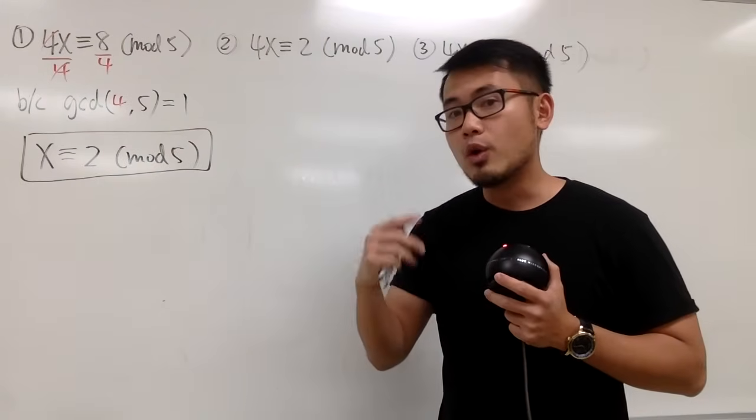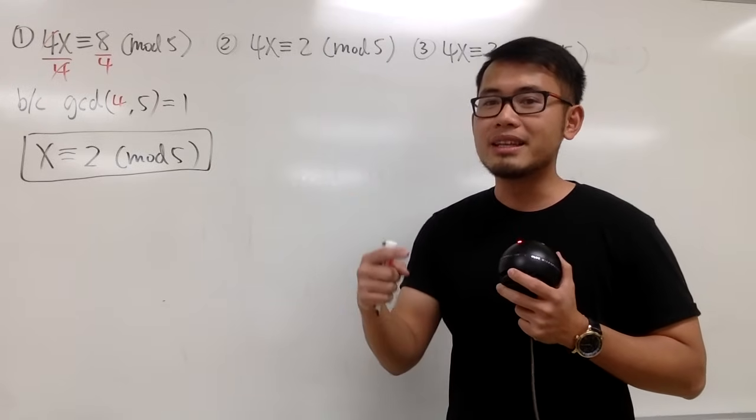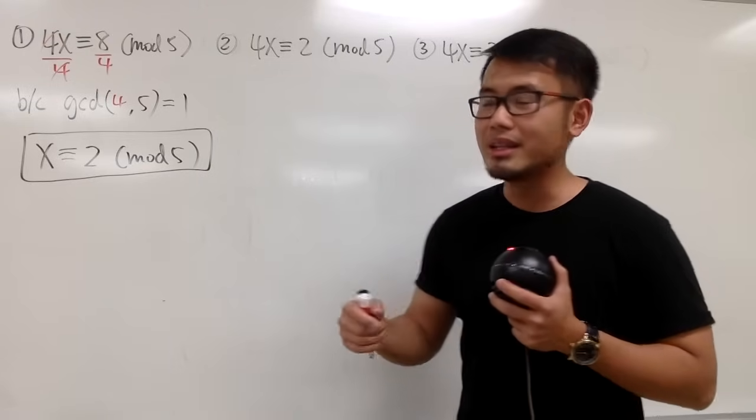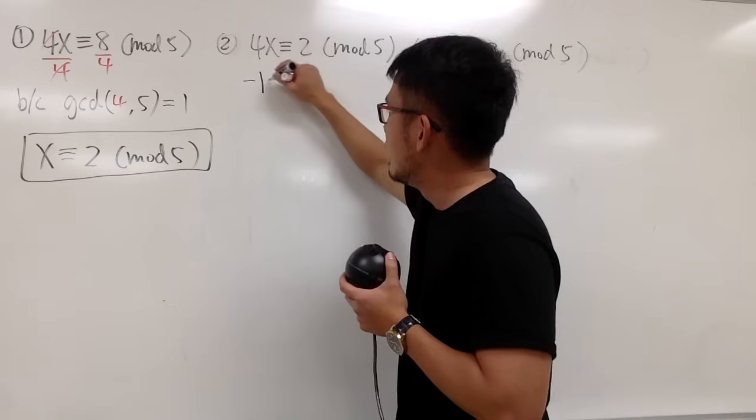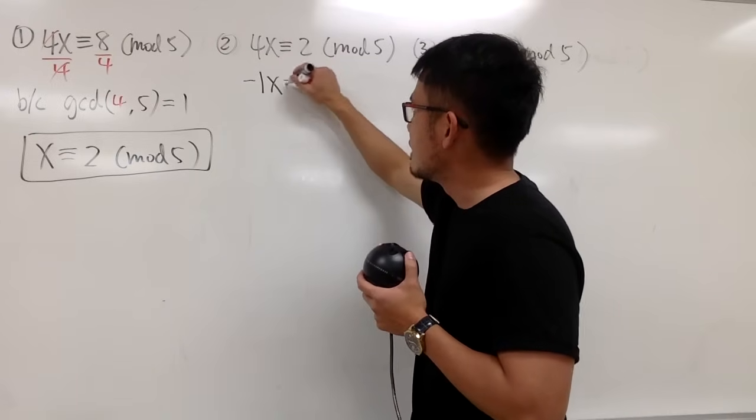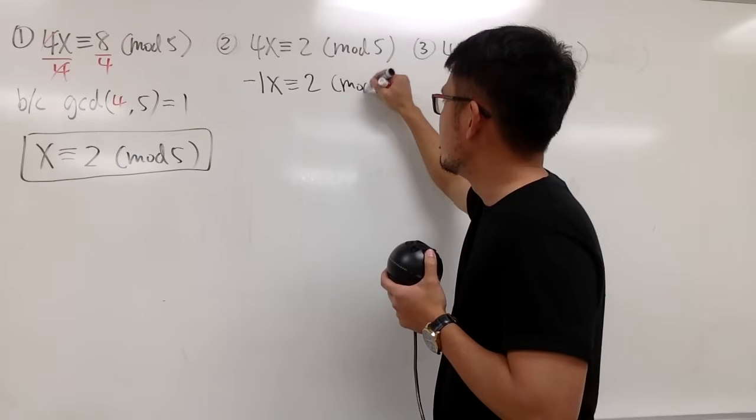4 mod 5. 4 is just pretty much smaller than 5, right, by 1. So you can just do 4 minus 5, which is negative 1. So this right here is just going to be negative 1x. And then you can maintain the congruent to 2. And then mod 5.